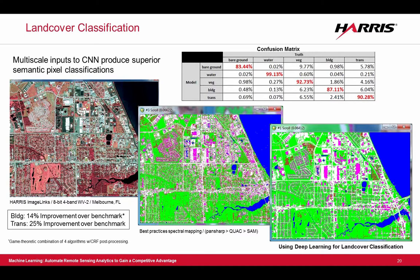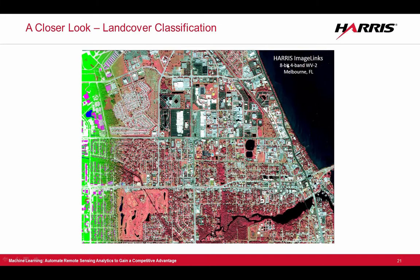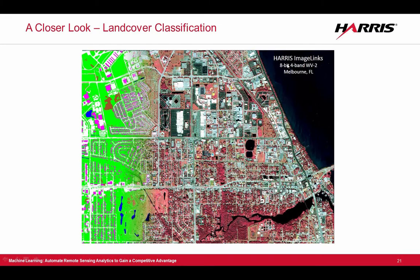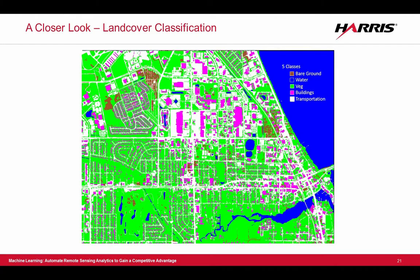Taking a closer look at land cover classification, what seems like a very complex scene becomes much more manageable by identifying each of the five classes. This classification product can be used with other available data like existing vector data or mapping services for many use cases, including: urban planning such as comparing building density over the years, extracting roads to analyze transportation networks, disaster recovery such as flood analysis comparing water differences between two scenes, forestry monitoring for deforestation, and many other applications.